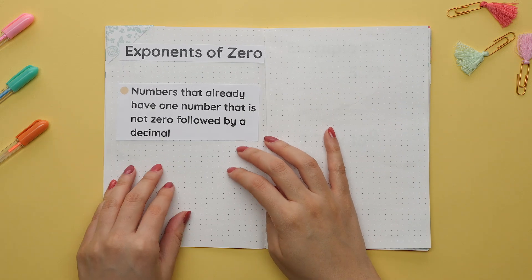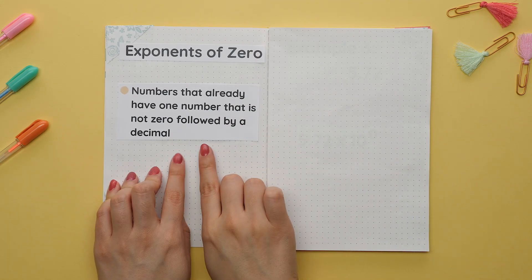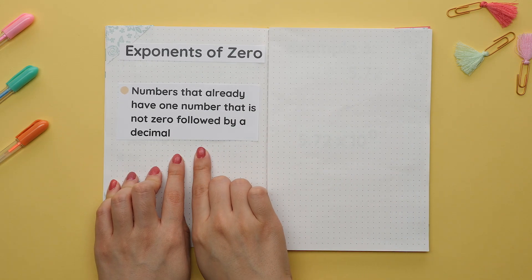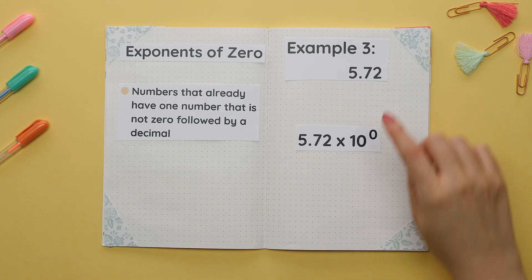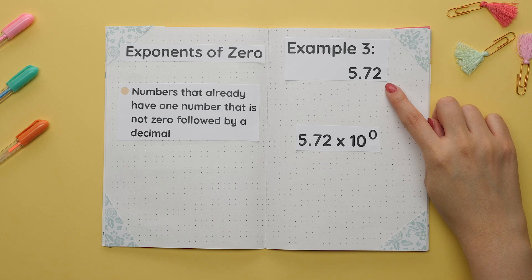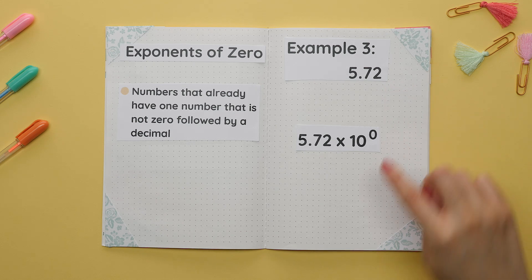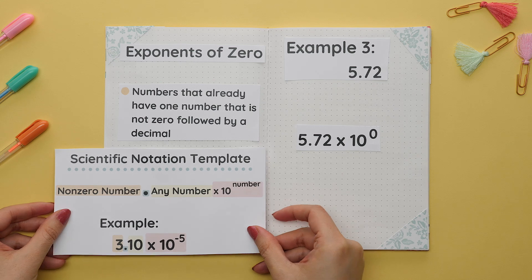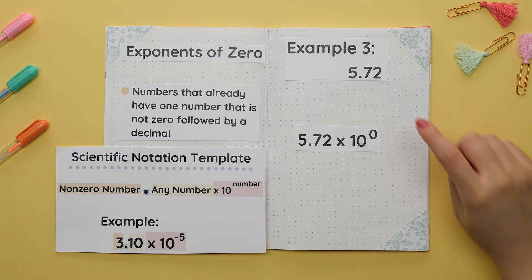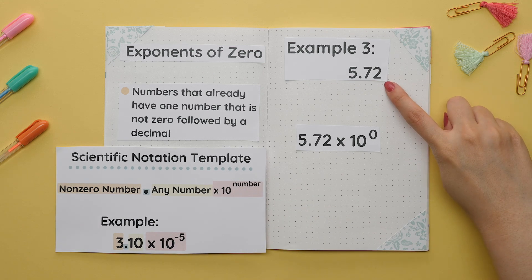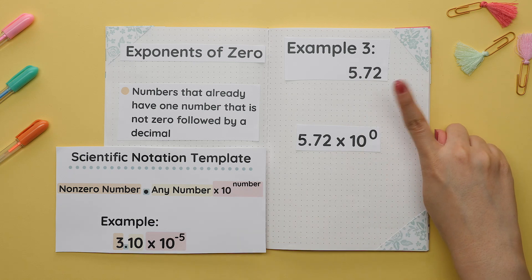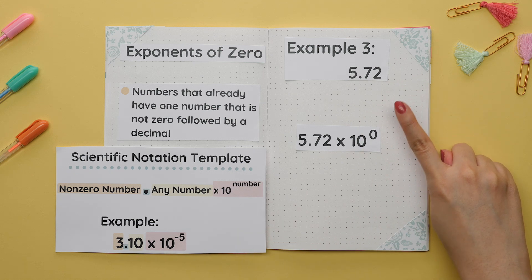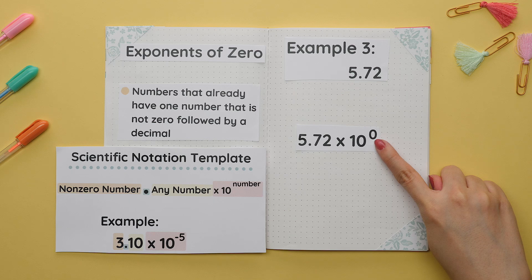Numbers that already have one number that is not zero followed by a decimal will have an exponent of zero when converting them to scientific notation. For example three, we are converting 5.72, which is in standard notation, to scientific notation. In this example we already have the first part of the general template, so we don't have to move the decimal place, and since we didn't move the decimal place, the exponent would be zero.